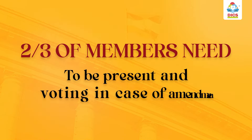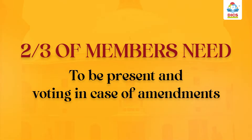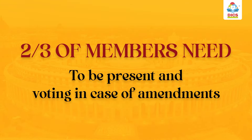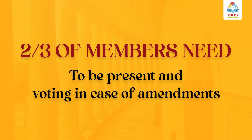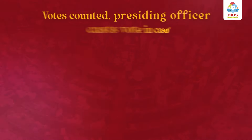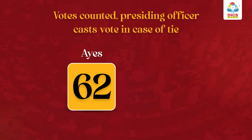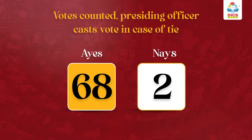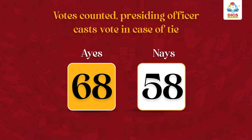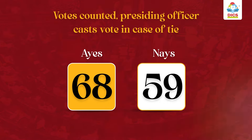However, when amending a bill, not less than two-thirds of the members are required to be present and voting. The votes are then counted, and in case of a tie, the presiding officer of the house casts his or her vote.